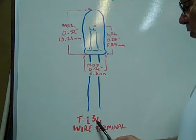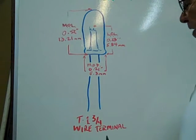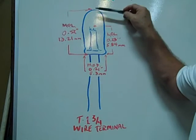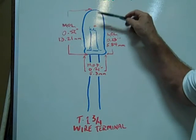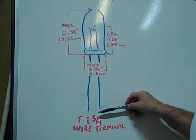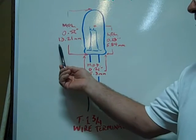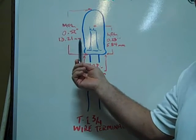The T1 and 3 quarter wire terminal base bulb has a maximum overall length of just the glass envelope, not including the wire terminals, of 0.52 inches, 13.21 millimeters.